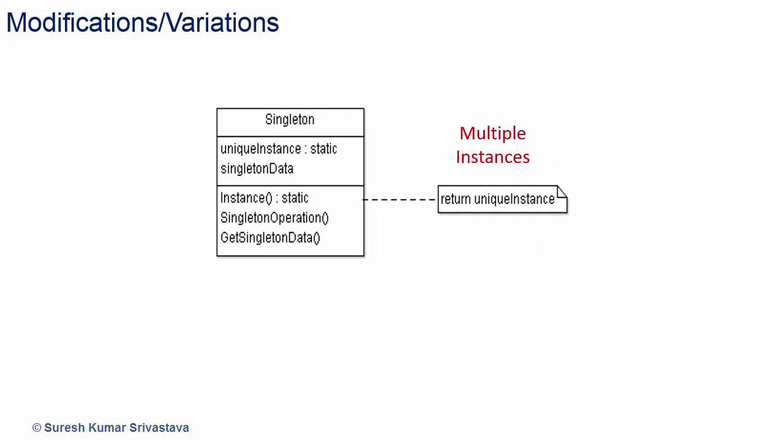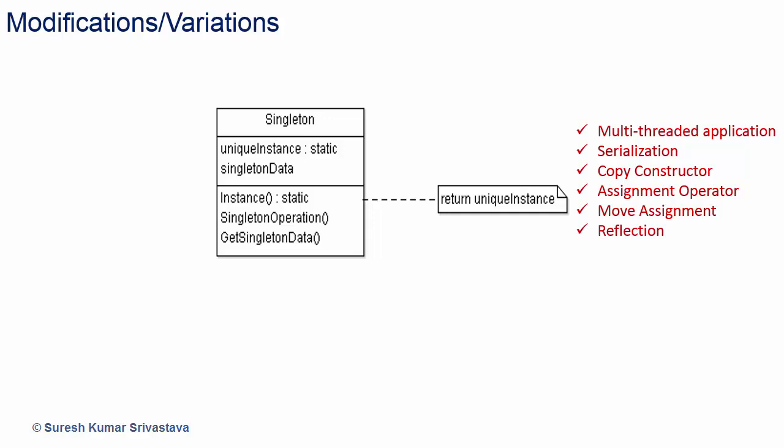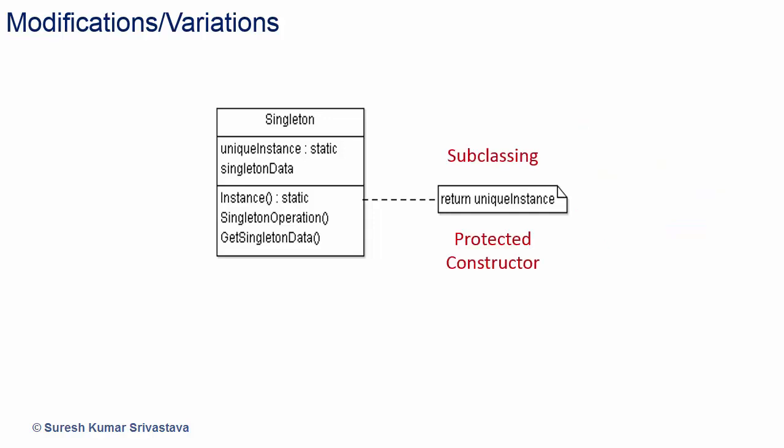There can be some other scenarios where multiple instances can be created and have to be taken care of appropriately. For example, a multi-threaded application has to be taken care of for single instance creation. There can be other scenarios too, like serialization, copy constructor, assignment operator, and move assignment. Some languages provide a reflection facility for creation of instance, so that also has to be taken care of. Subclassing requires the constructor to be protected and can be supported in multiple ways — one way will be to keep the instances somewhere and provide them when required by returning the appropriate one.